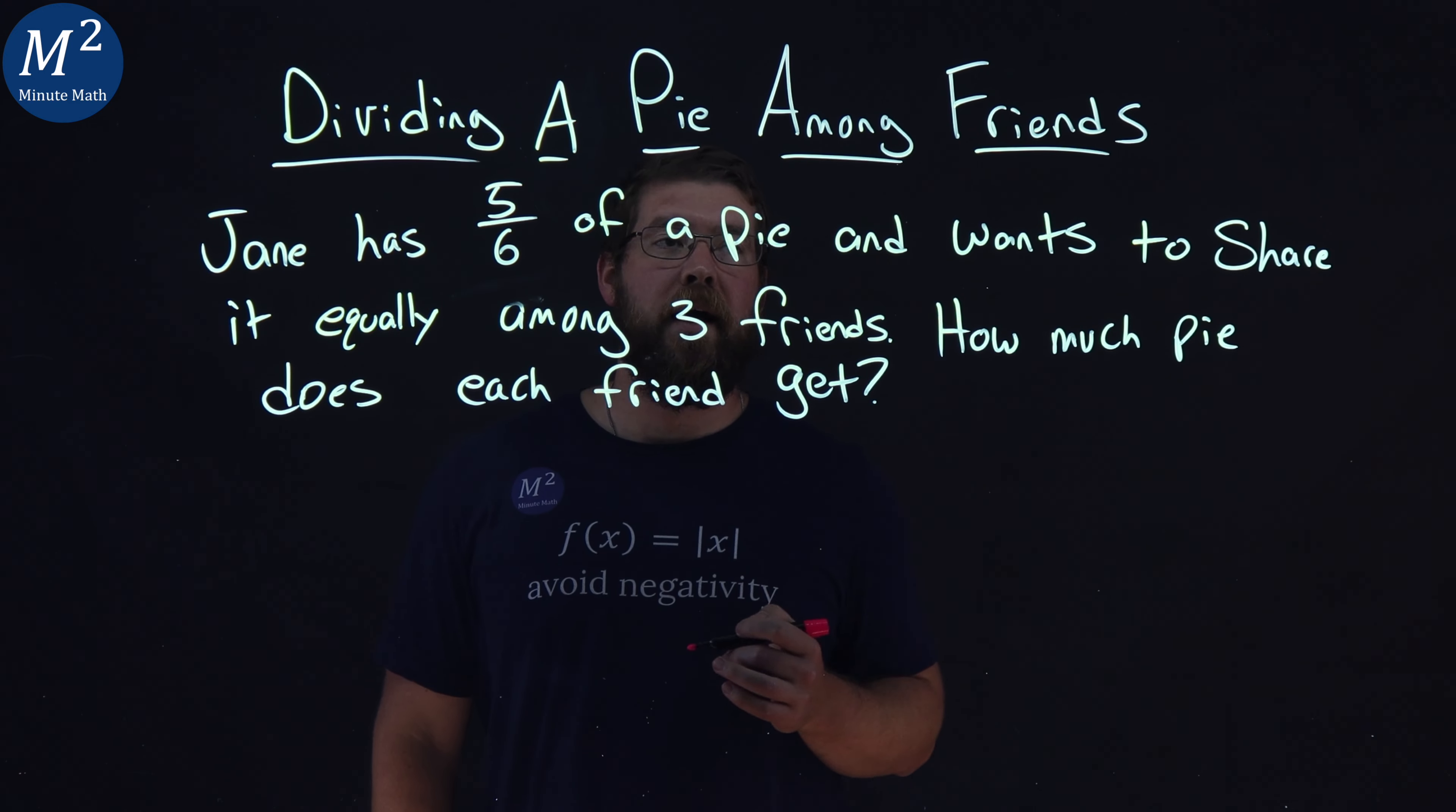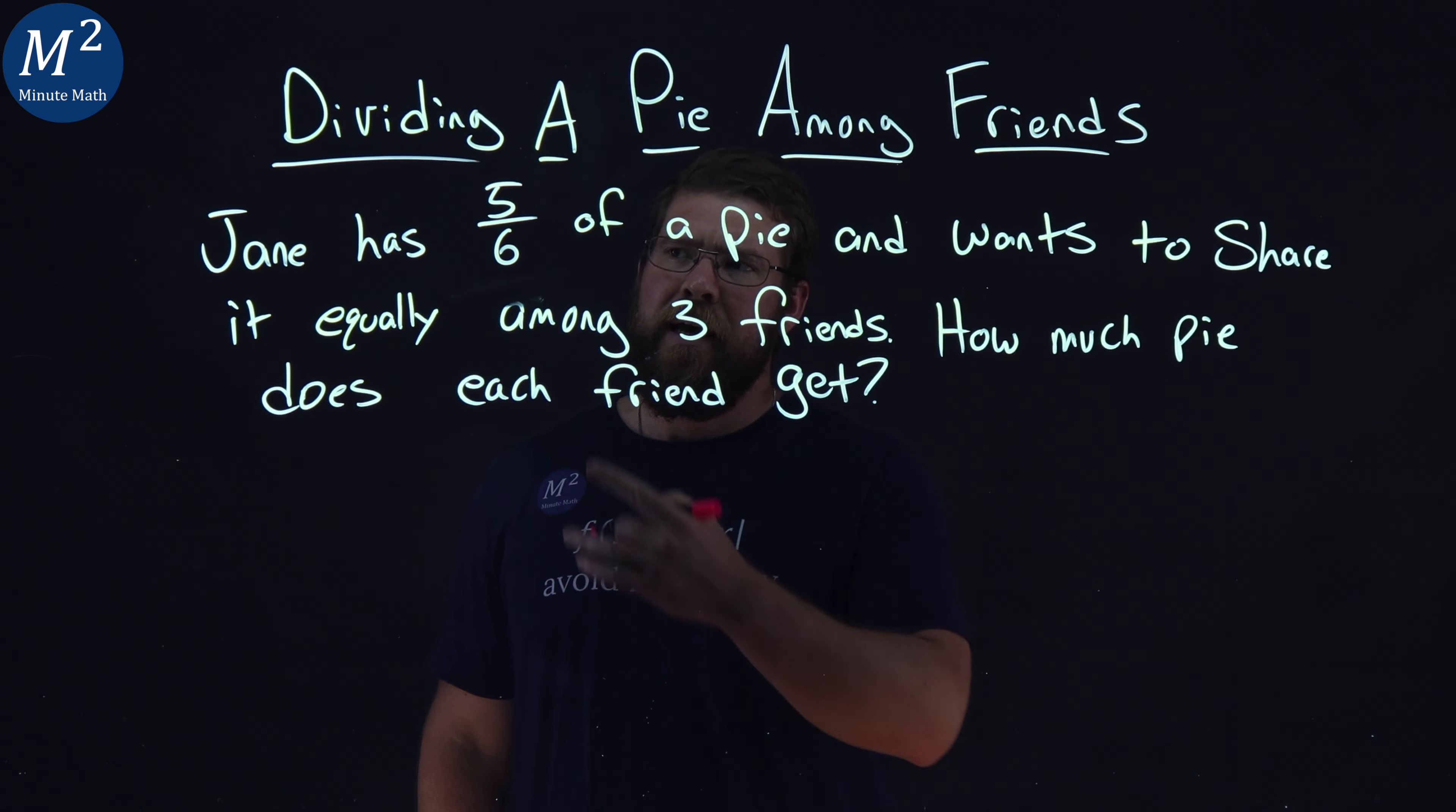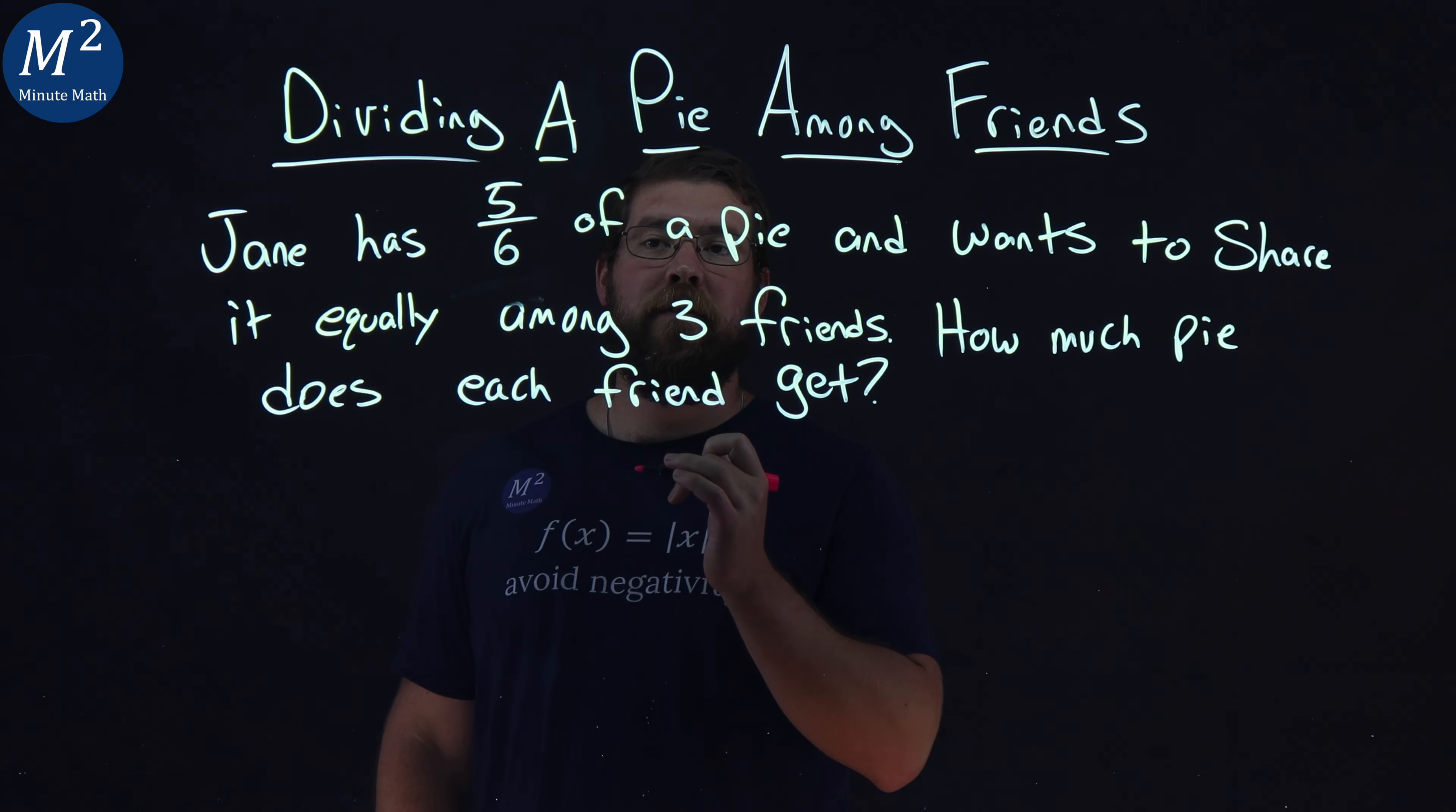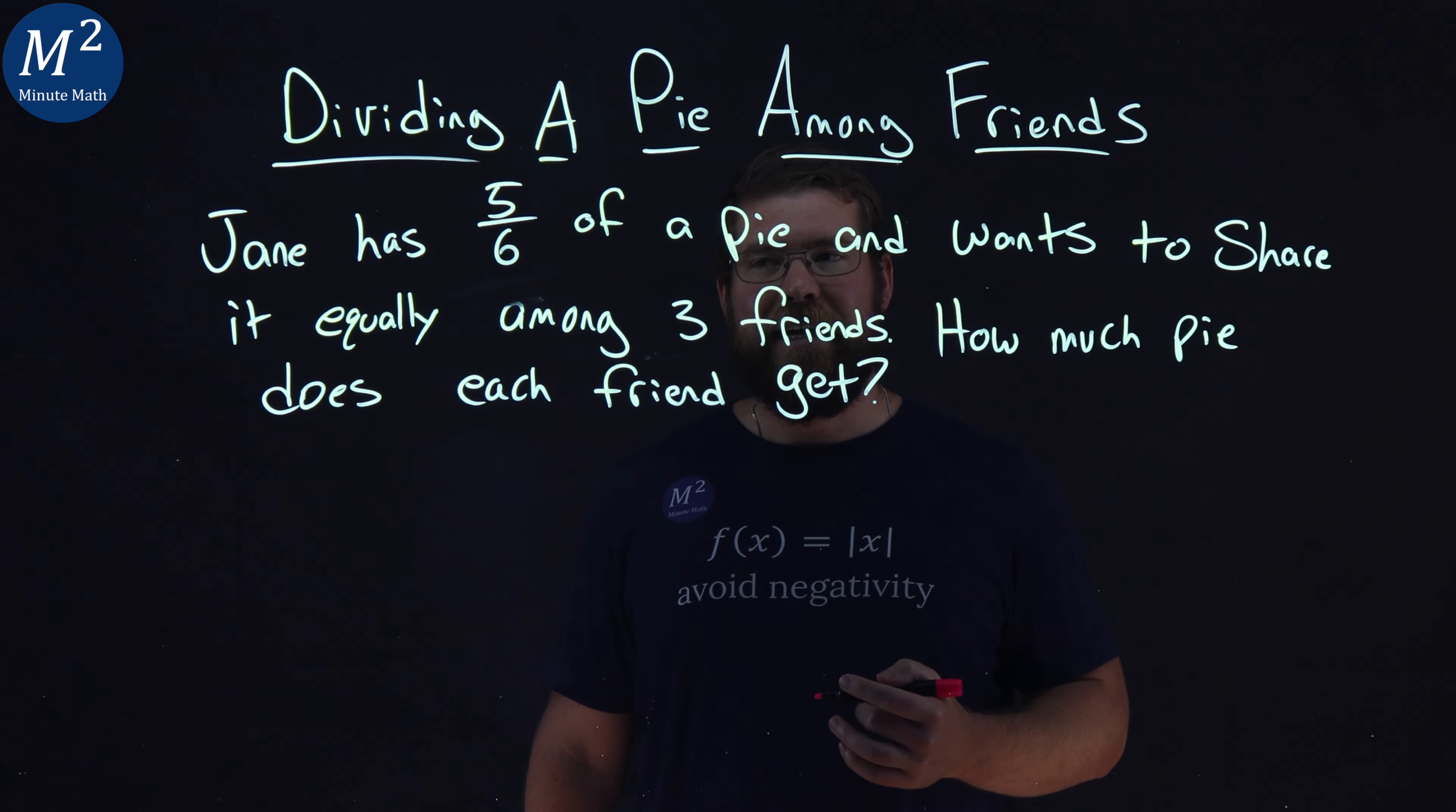Let's learn about dividing a pie among three friends. Jane has five-sixths of a pie and wants to share it equally among three friends. How much pie does each friend get?